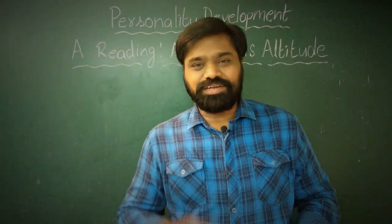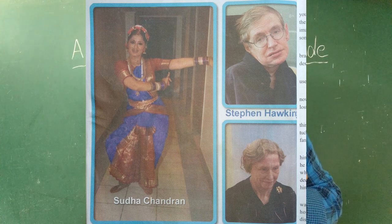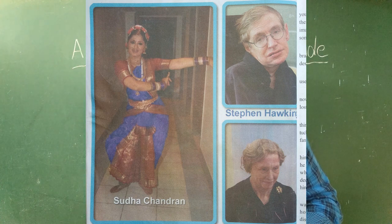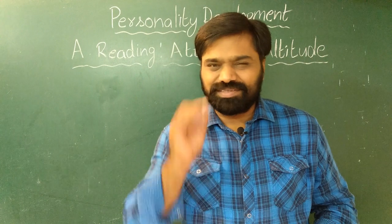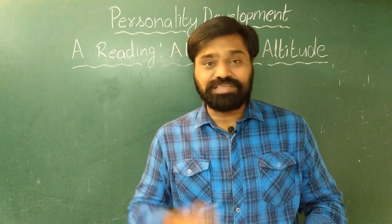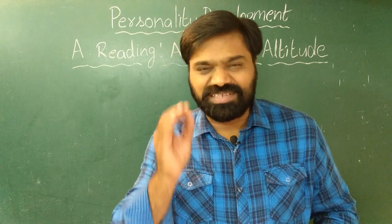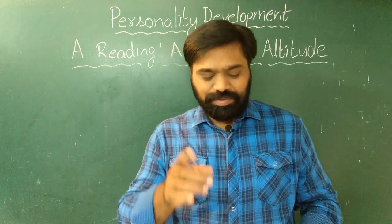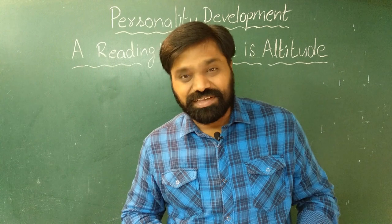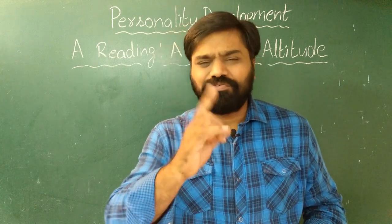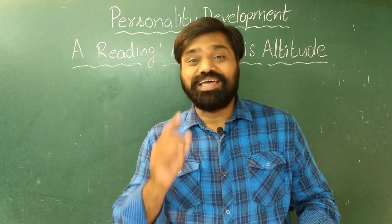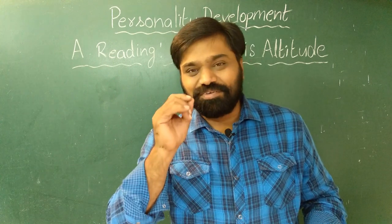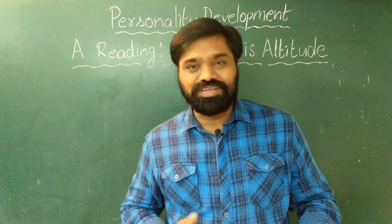I want all of you to look at page number two, the face sheet of this unit. You are going to find the pictures of three great personalities: Sudha Chandran, Stephen Hawking, and Helen Keller. Sudha Chandran is a very famous Indian classical dancer who has acted in many films and TV serials. Stephen Hawking is a world famous physicist who has done a lot of work in the area of black holes. Helen Keller is a world famous humanitarian and novelist from America.